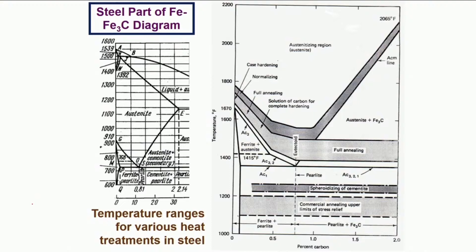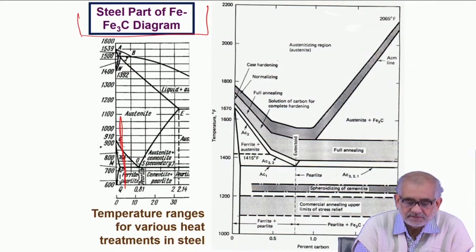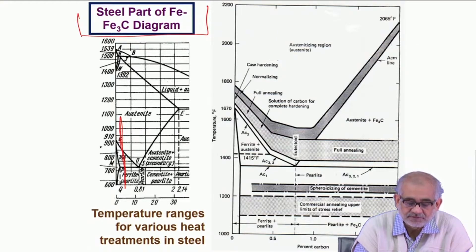If we look at the first slide, this is the steel part of the iron-cementite phase diagram and we are primarily concerned. We are dealing with an alloy which is low carbon, 0.2-0.3 percent carbon, and in order to introduce carbon we took it to 930-940°C in that temperature range, so that carbon can diffuse in faster and deeper.